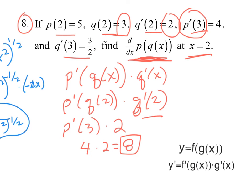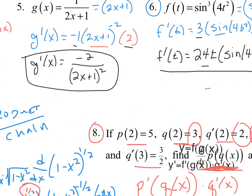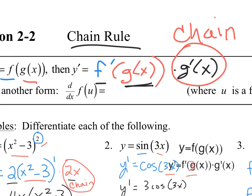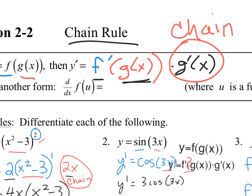That's the chain rule. Going back to the f of u notation: the chain rule says f is the outside function and u is the inside function. u is a function of x, so this would be f prime, leave u alone, then chain off u. That is another way to represent the chain rule.